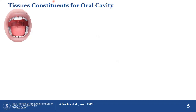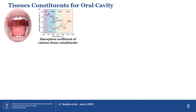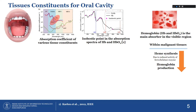Now I'll talk about what tissue constituents in the oral cavity are important to us. This is the intraoral cavity, and we try to understand the key tissue constituents. We focus mainly on hemoglobin — the constituent that carries oxygen. If it is carrying oxygen, it is called oxygenated hemoglobin; if not, it is deoxygenated hemoglobin.